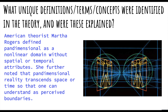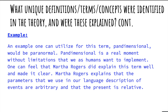What unique definitions, terms, and concepts were identified in the theory? American theorist Martha Rogers defined pandimensional as a nonlinear domain without spatial or temporal attributes. She further noted that pandimensional reality transcends space or time so that one can understand its perceived boundaries. An example one can utilize for this term, pandimensional, would be paranormal. Pandimensional is a real moment without limitations that we as humans want to implement on them. Martha Rogers explains that the parameters we use in our language description of these events are arbitrary and that the present is relative.